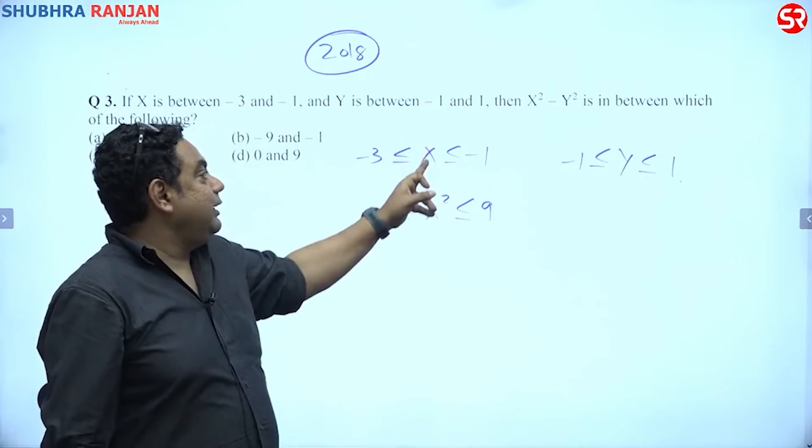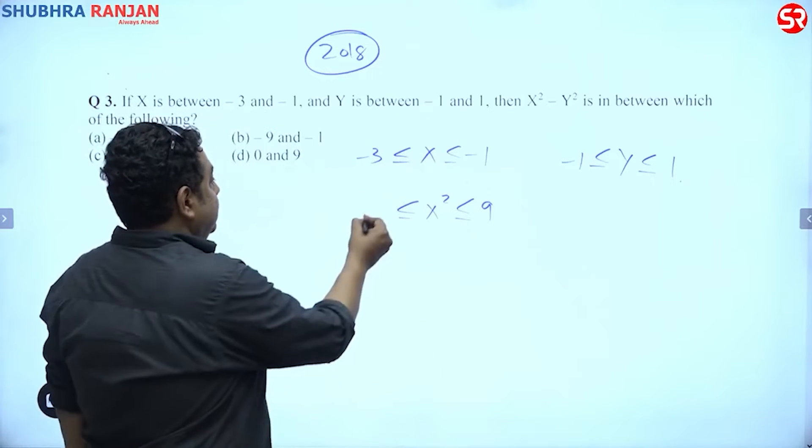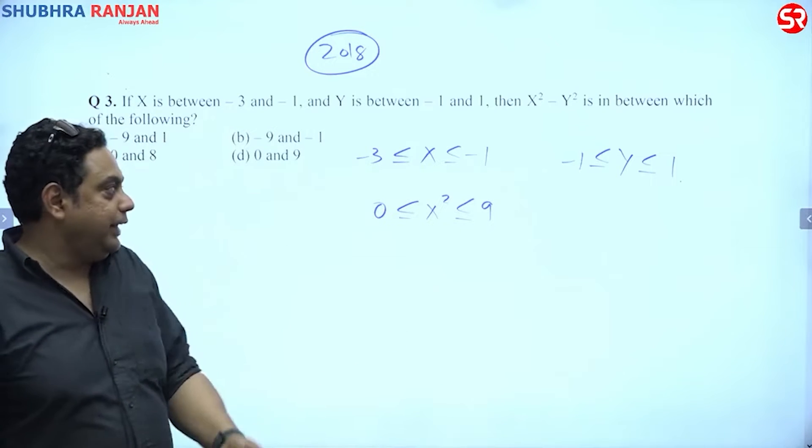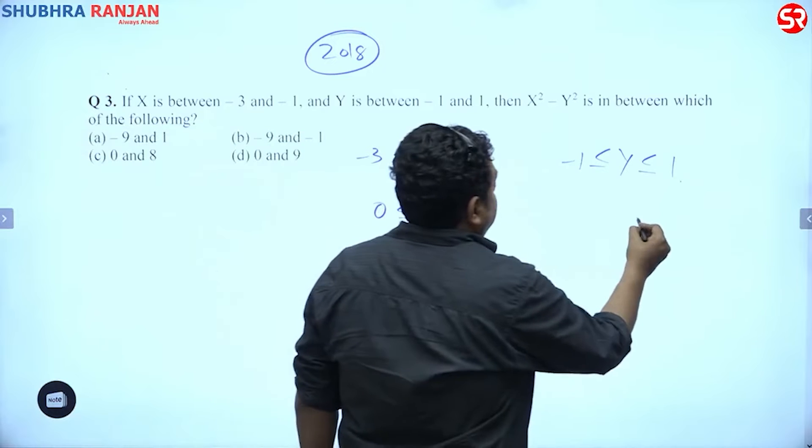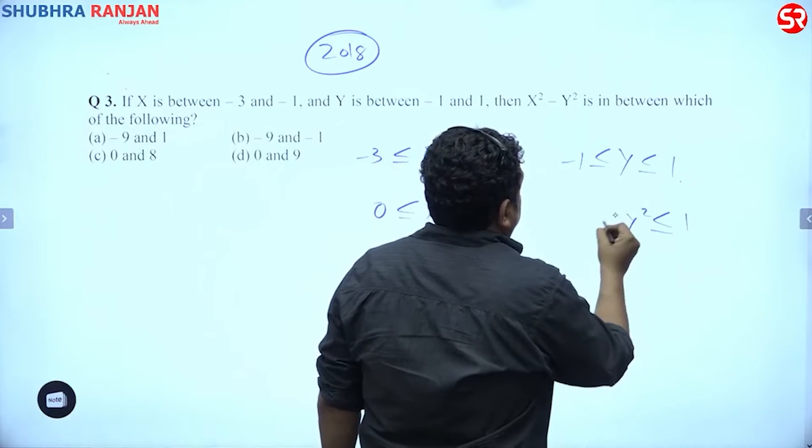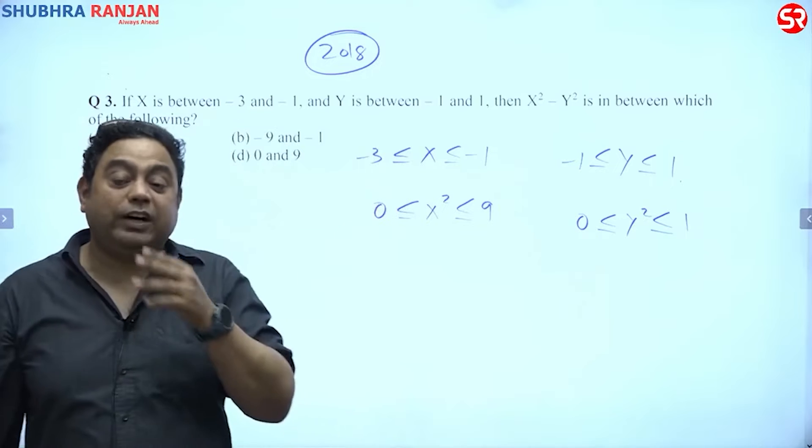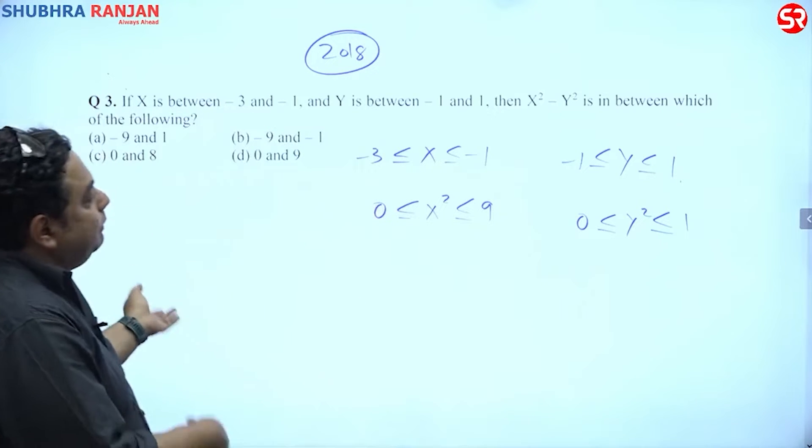see, x can take 0 as well, so 0 square is 0. So minimum value would be 0, not 1. That is wrong, right? Similarly, y square: 1 square is 1, but 0 is also there. So y square lies between 0 to 1 because squaring is always positive.